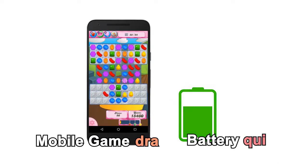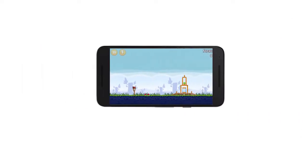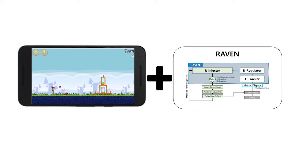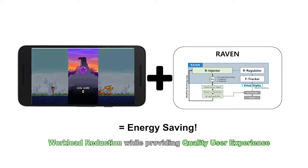Mobile games drain battery quickly. As a solution, we present Laban. Laban cuts energy consumption by reducing rendering workloads while providing quality user experience.